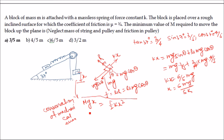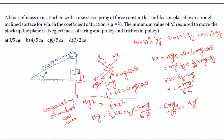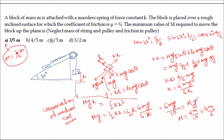So Mgx = (1/2)kx², which gives Mg = (1/2)kx. Substituting x = 6mg/(5k), we get Mg = (1/2)k × 6mg/(5k) = 6mg/10 = 3mg/5. Therefore M = 3m/5. So the minimum value of capital M is 3m/5 — even smaller than small m — yet it is still able to move the block of mass m up the plane. This is an important concept.